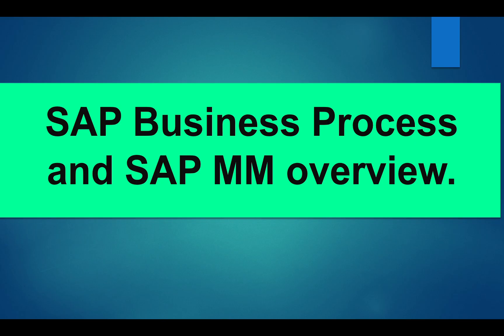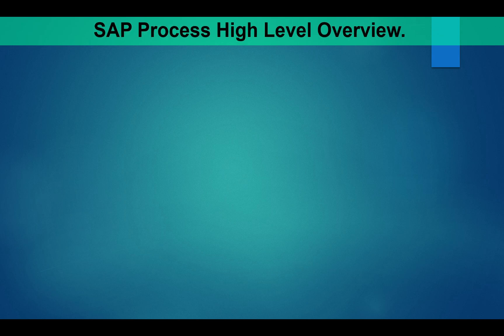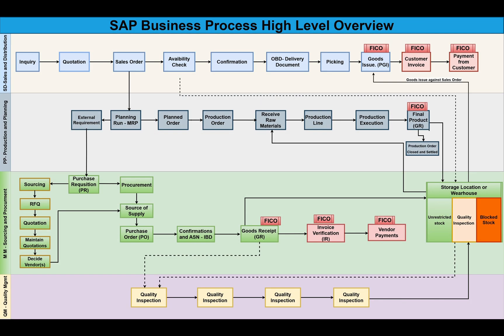One important note: do not run any transaction in the system while watching this video. Just try to understand how this process view and SAP MM P2P cycle works, because you will not have all master data or your org structure set up yet. This video is only for understanding. In a later video — around your fifth or sixth — after you create master data and org structure, you will actually perform the P2P cycle in your system.